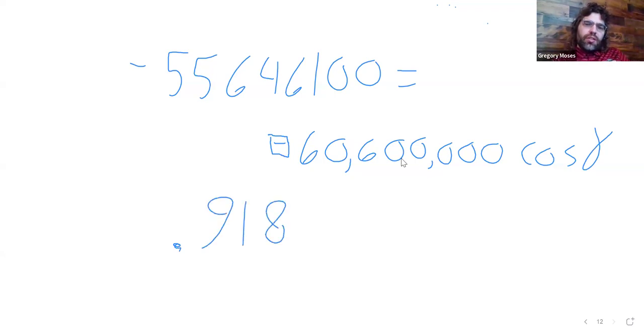These very huge numbers end up being about one when we divide them, and then we take the arc cosine.